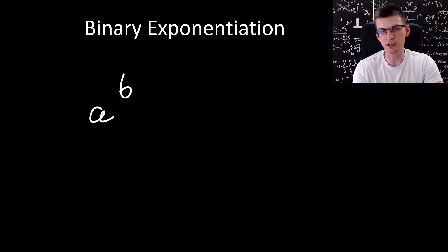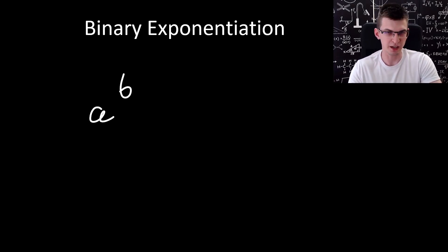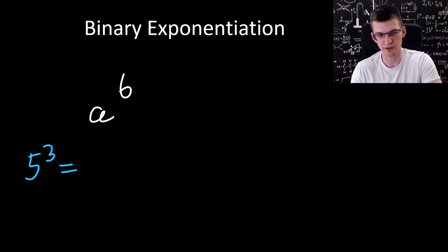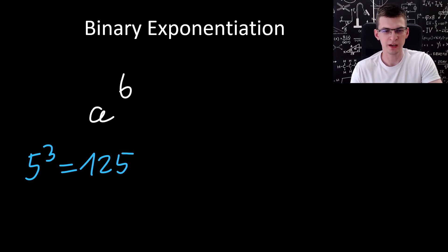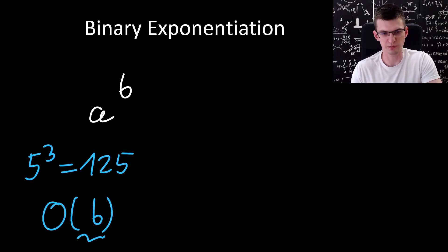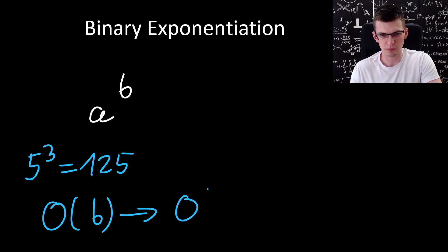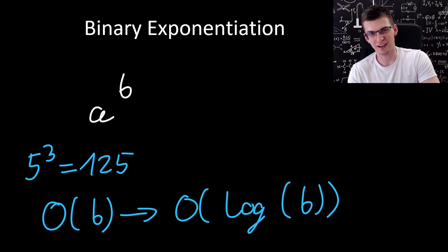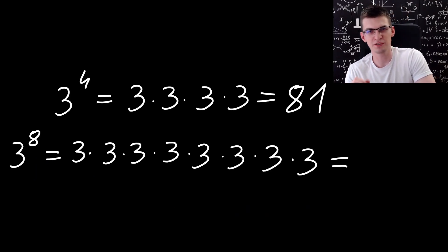Binary exponentiation is an algorithm that quickly computes the power of a number a to b, given a and b. For example, 5 to the 3rd power is 5 times 5 times 5, which is 125. Instead of applying brute force in O(b) where you just multiply a by a repeatedly, we need logarithmic complexity O(log b).